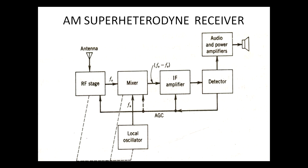This is the simplified block diagram of a superheterodyne receiver. It mainly consists of a receiving antenna, RF stage, mixer, local oscillator, intermediate frequency amplifier, detector, then audio and power amplifier, and finally a loudspeaker.